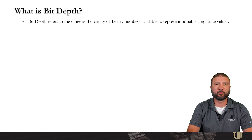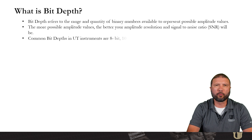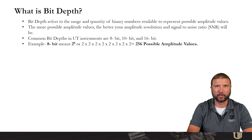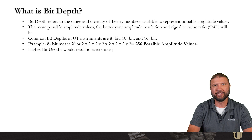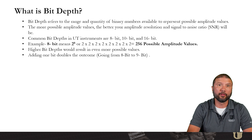The bit depth refers to the range and quantity of binary numbers available to represent possible amplitude values. The more possible amplitude values, the better our amplitude resolution and signal-to-noise ratio will be. Some common bit depths in UT testing are 8-bit, 10-bit, and 16-bit, and there are others out there.